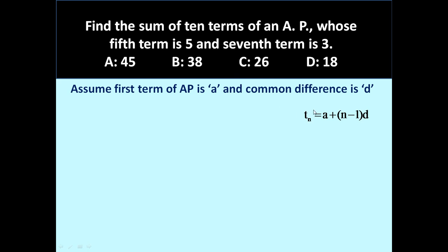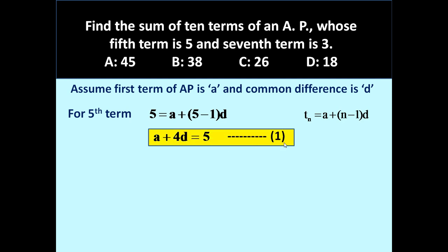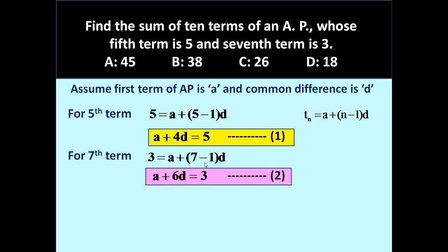Since the 5th term is 5, using tn equals A plus (n minus 1) into D with n equal to 5: 5 equals A plus 4D. This is equation 1. Since the 7th term is 3, with n equal to 7: 3 equals A plus 6D. This is equation 2. Solving equations 1 and 2 together, we get A equals 9 and D equals minus 1.